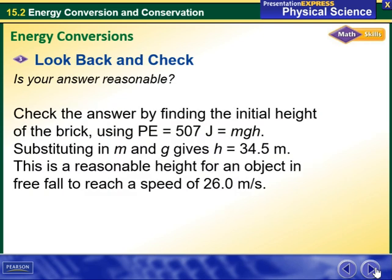We are going to check if our answer is reasonable. Check the answer by finding the initial height of the brick using PE equals 507 joules. The original formula for gravitational potential energy equals mass times g, which is the gravitational constant, times h. Substituting the mass and g gives us h, which is the height, equals 34.5 meters. This is a reasonable height for an object in free fall to reach a speed of 26 meters per second.